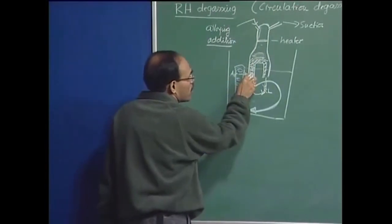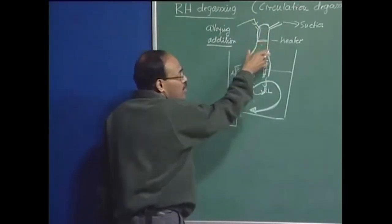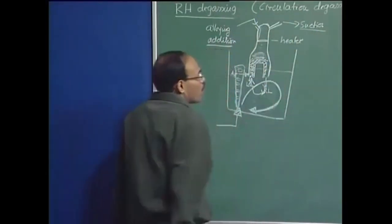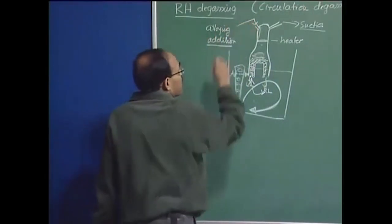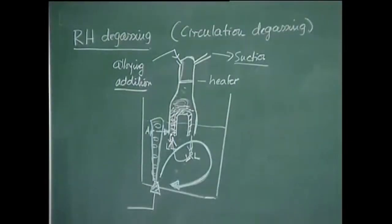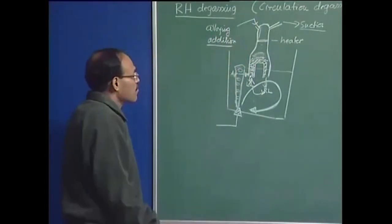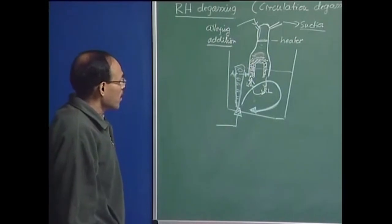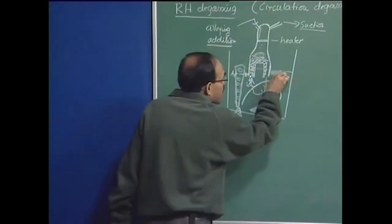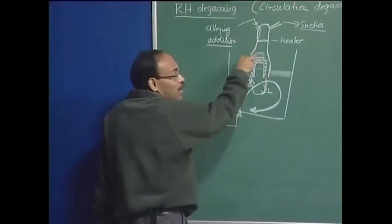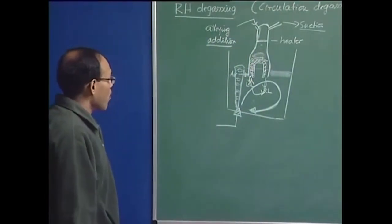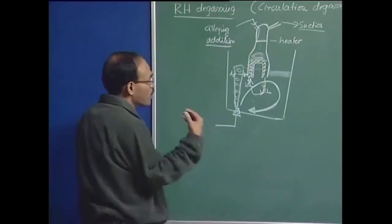Alloying additions, temperature measurements, and other operations can be carried out without breaking the vacuum. The legs must be submerged to a certain depth below the slag layer so that it is molten metal — not slag — that is drawn inside. Some submergence of the legs in the metal is very important. As molten metal is subjected to the degassing technique, the nitrogen and hydrogen levels can be significantly reduced.